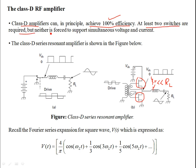You need at least two switches for Class D amplifiers, but neither are forced to support simultaneous voltage and current. In this configuration we use a center-tap transformer with a complementary push-pull configuration, such that if transistor Q1 is on then Q2 is off, and when Q2 is on Q1 is off. Let's consider a simpler model with a very small resistance.